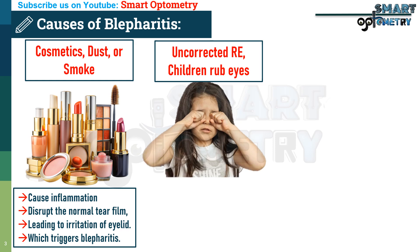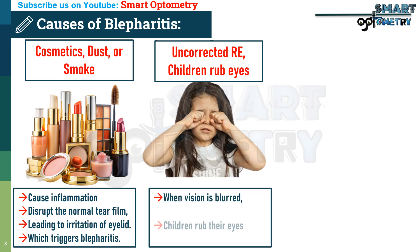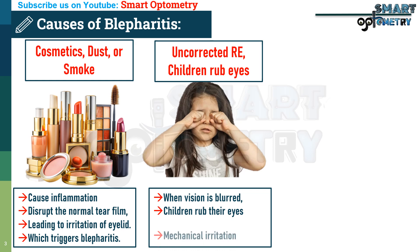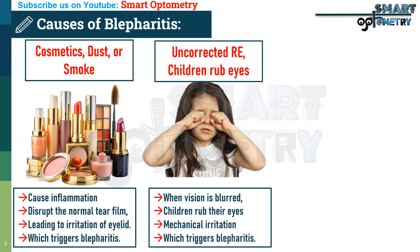Second: uncorrected refractive error. When vision is blurred, children may frequently rub their eyes to try to see more clearly, causing repeated mechanical irritation that leads to blepharitis.